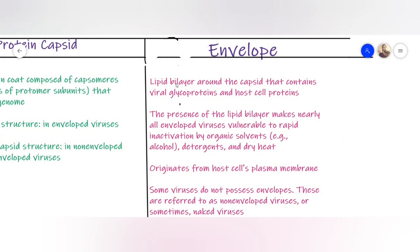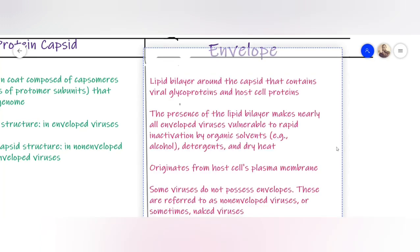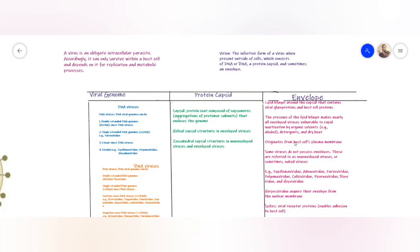This envelope is a lipid bilayer around the capsid that contains viral glycoproteins and host cell proteins. The presence of this lipid bilayer makes these viruses with envelope vulnerable to organic solvents such as alcohols and detergents. Here in May 2020, there's an outbreak and pandemic of COVID-19. This coronavirus is enveloped, so that's why it's encouraged to wash your hands with alcohol-based detergents to kill this virus.